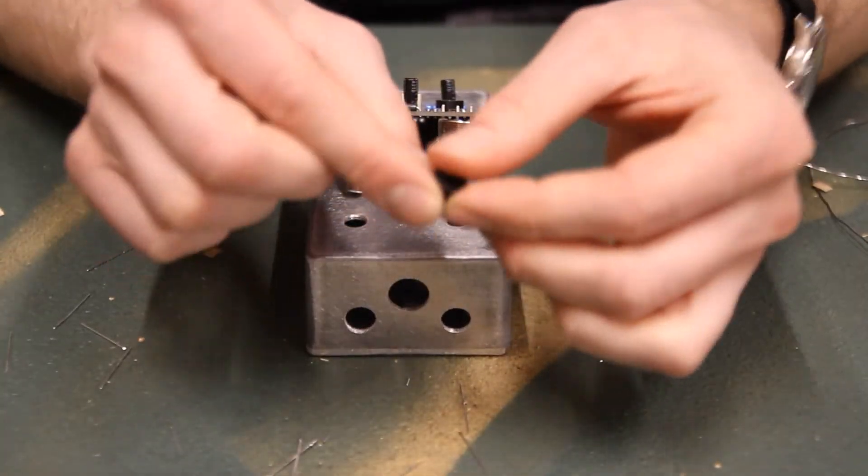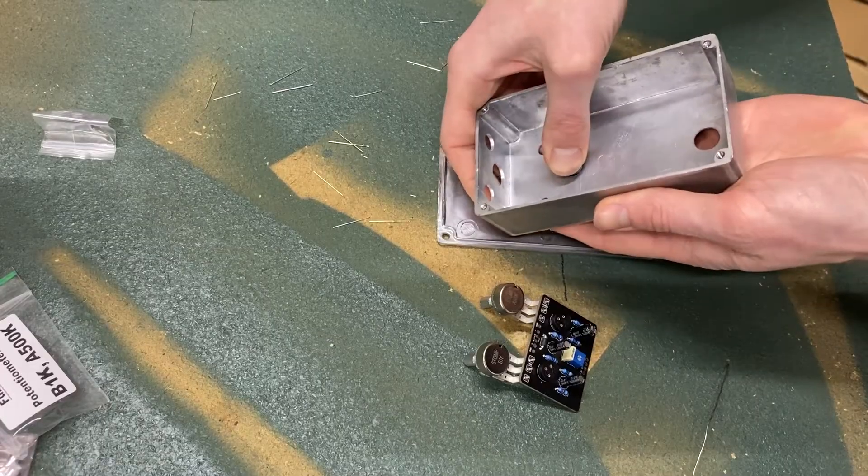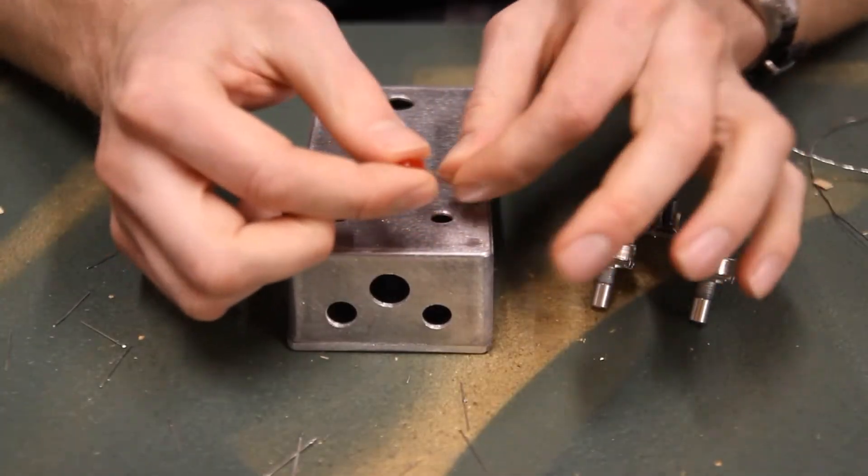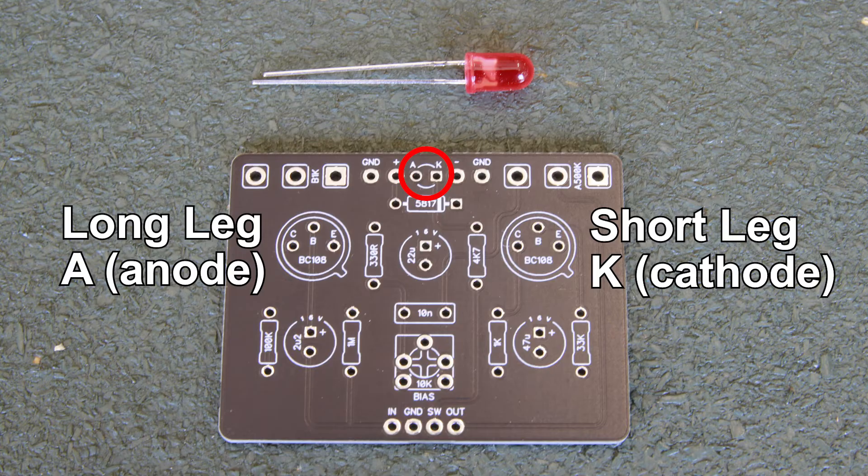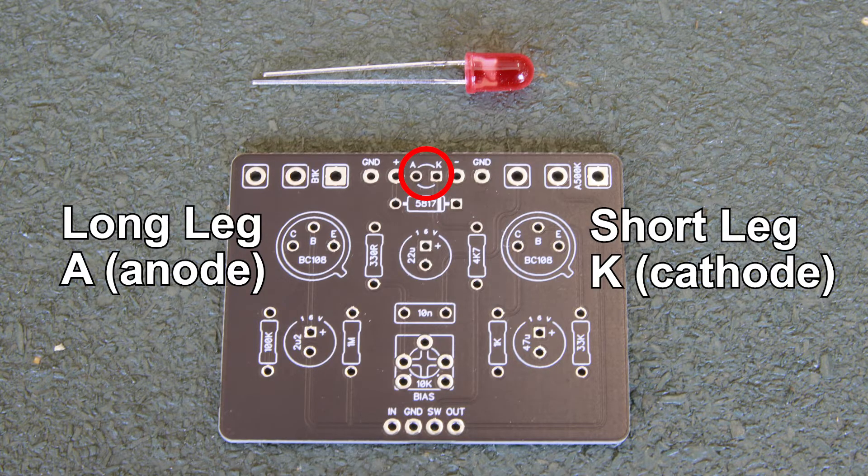Find the LED bezel and push it through the center from the inside of the enclosure. Find the LED. It has polarity. The anode, marked A on the PCB, will have a longer leg and the cathode, marked K on the PCB, will have a shorter leg. Sometimes the cathode side of the LED will also have a small flat side on the actual LED body.